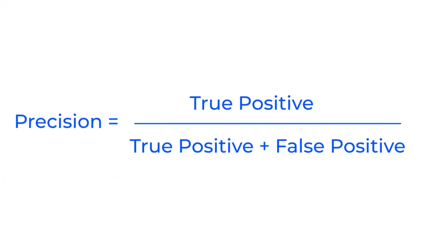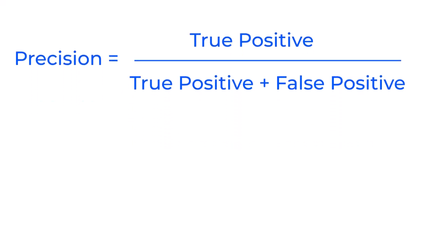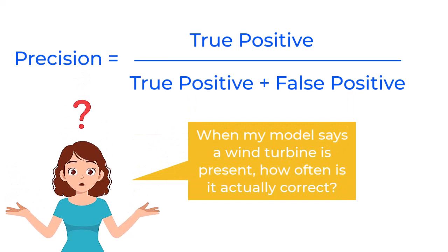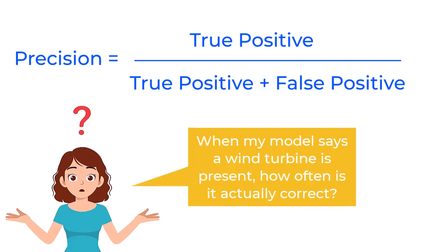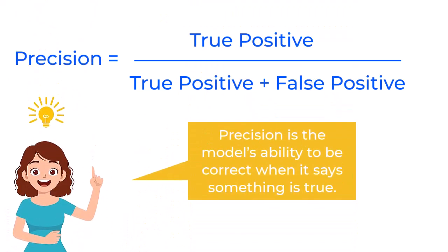Let's take a look at the precision equation one more time. The score tells me the percentage of positive predictions the model made and answers this question: When a model says a wind turbine is present, how often is it actually correct? If the precision score is high, the model is more likely to be accurate when it predicts a wind turbine. Ultimately, precision is the model's ability to be correct when it says something is true.